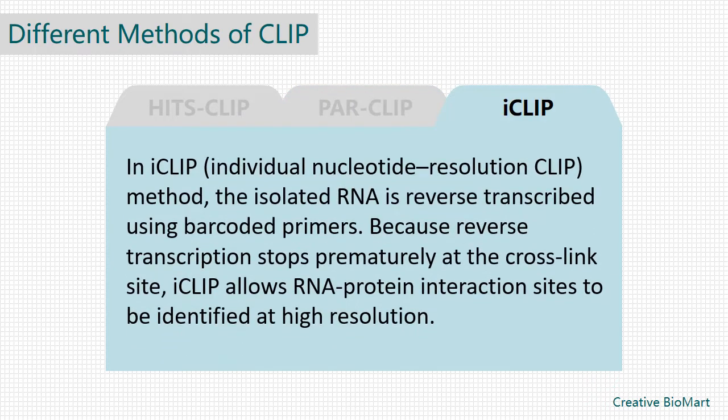Individual nucleotide resolution CLIP (iCLIP) uses ultraviolet light to covalently bind proteins and RNA molecules. In this method, the protein-RNA complexes are excised from the membrane and treated with proteinase to release the RNA. This leaves one or two amino acids at the RNA cross-link site. The RNA is then reverse transcribed using barcoded primers. Because reverse transcription stops prematurely at the cross-link site, iCLIP allows RNA-protein interaction sites to be identified at high resolution.